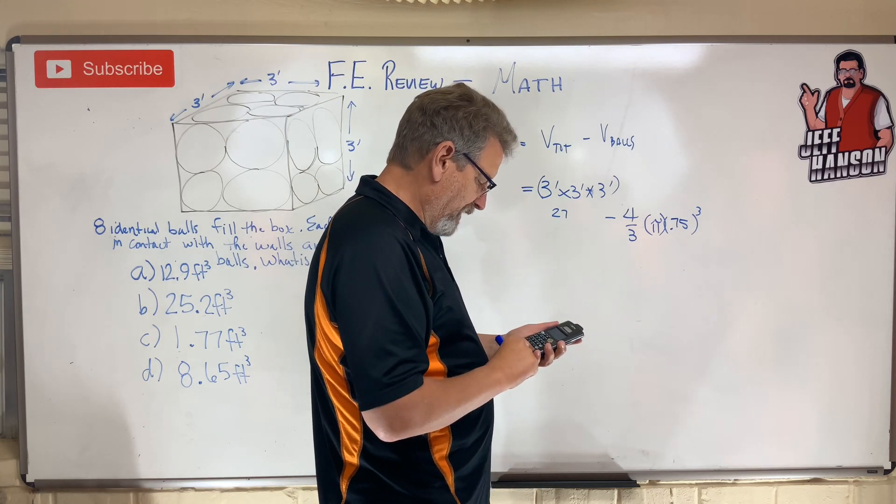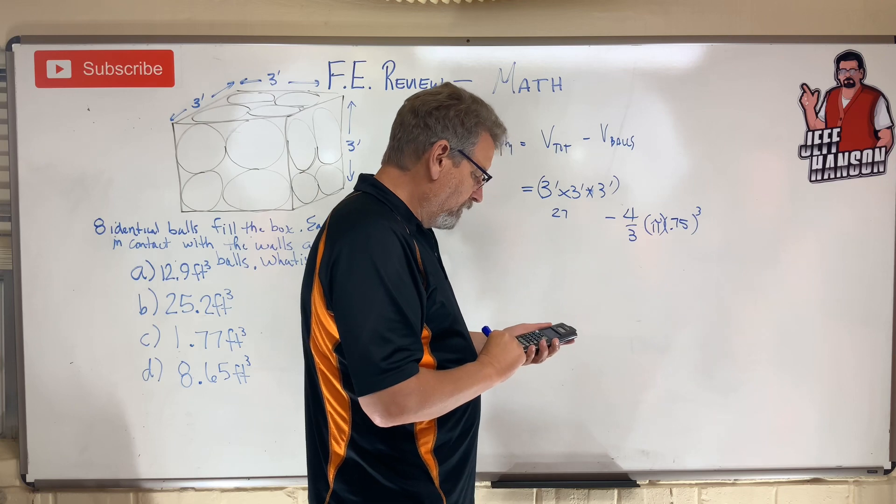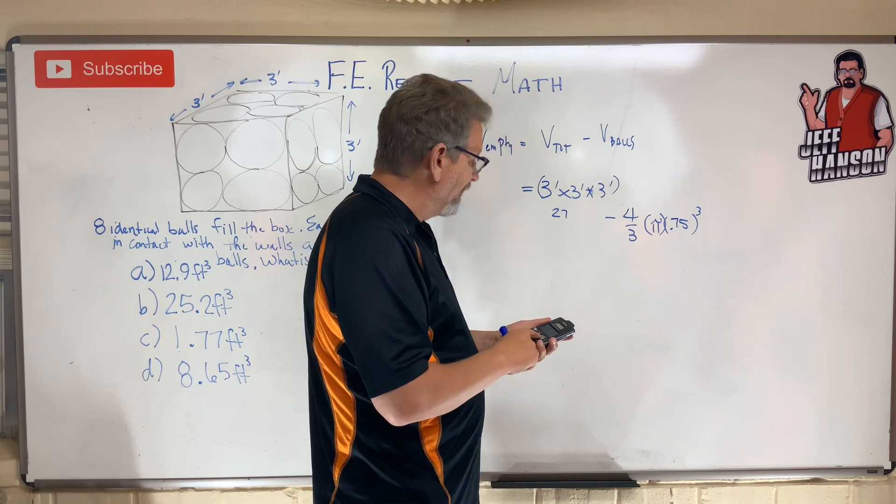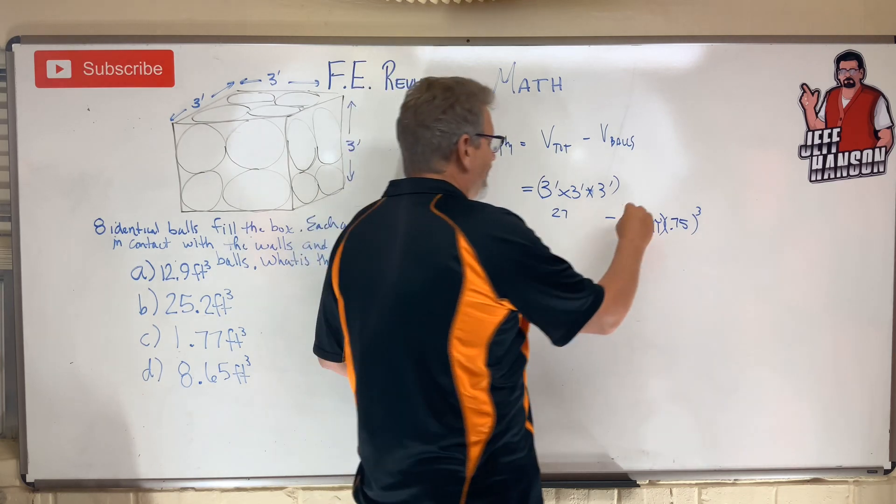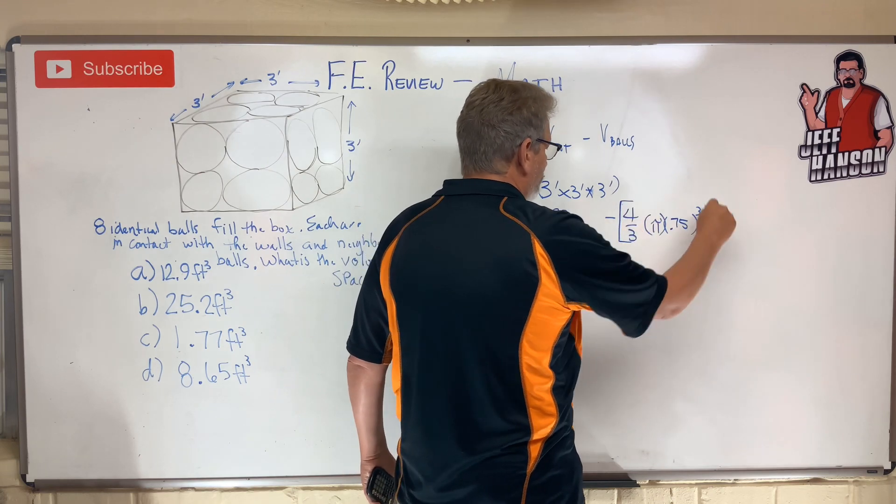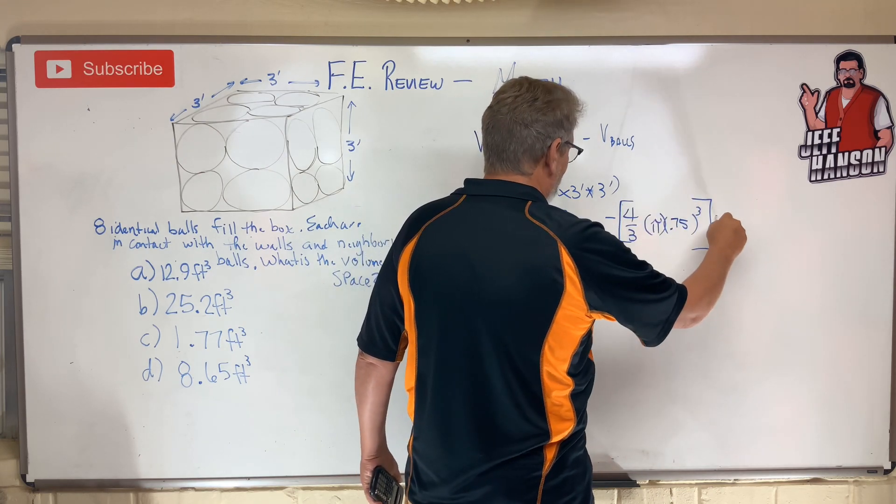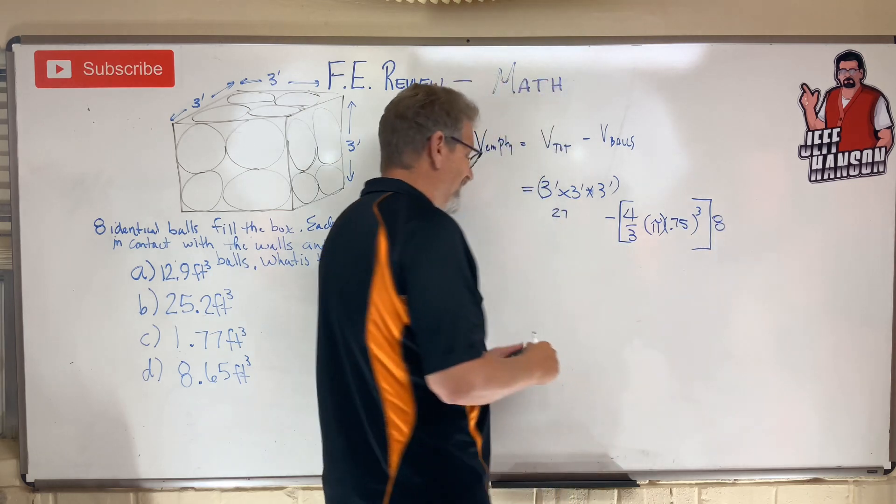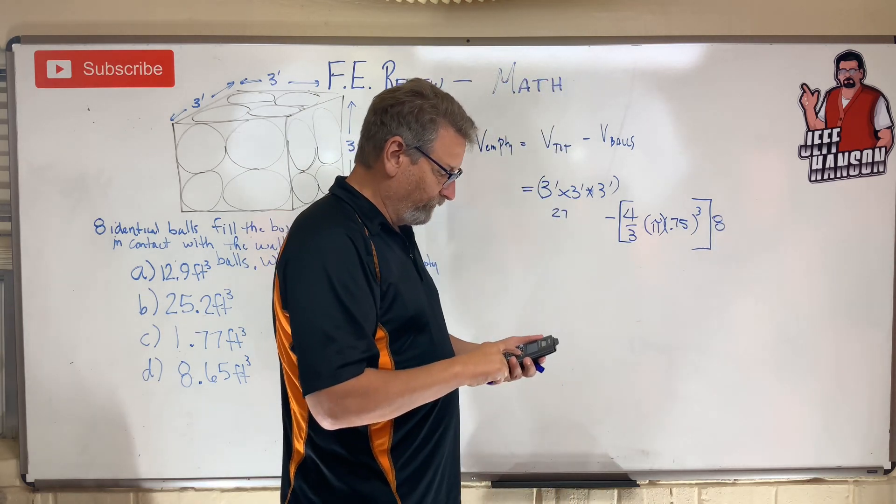27 minus answer. Wait a minute, almost messed that up, didn't I? That is the volume of how many balls? That's only one ball. Ooh, so times eight balls, right? Ooh, almost messed that up.